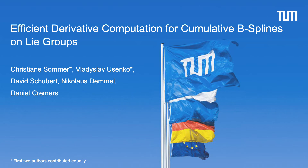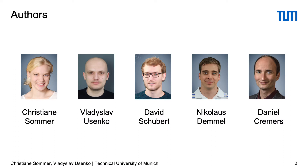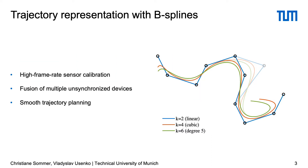In this video we present an efficient derivative computation for cumulative B-splines on Lie groups. This work was done at the Technical University of Munich. Continuous time trajectory representations using B-splines are used in many computer vision tasks, but current implementations require heavy computations and do not achieve real-time performance.